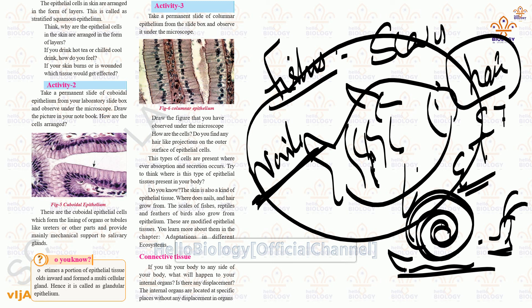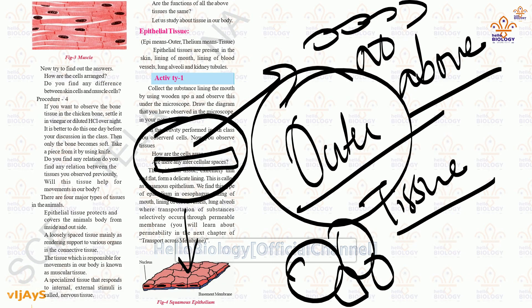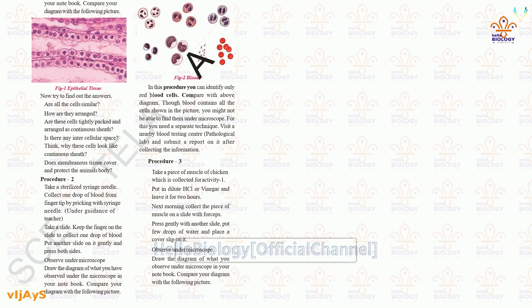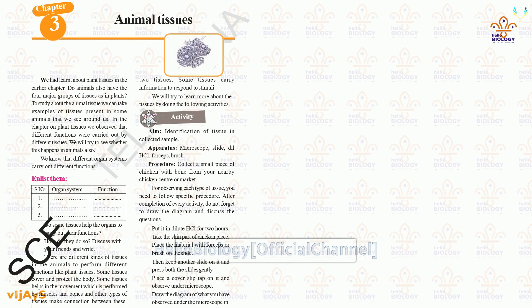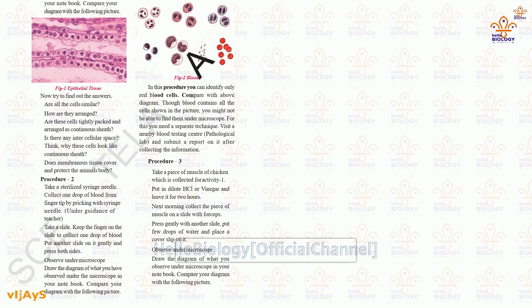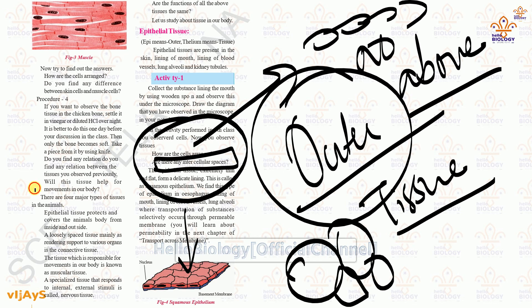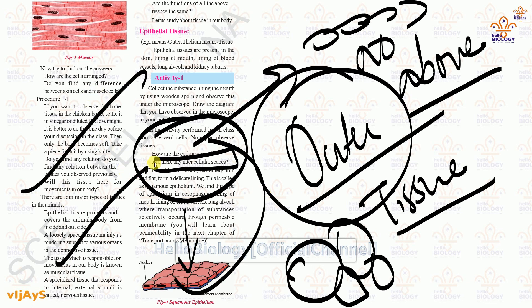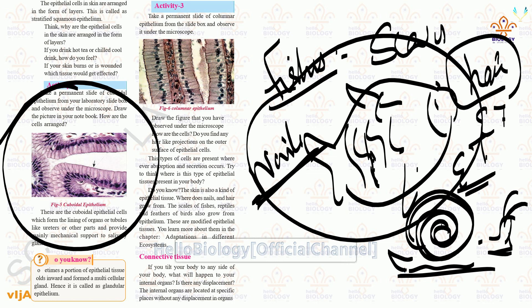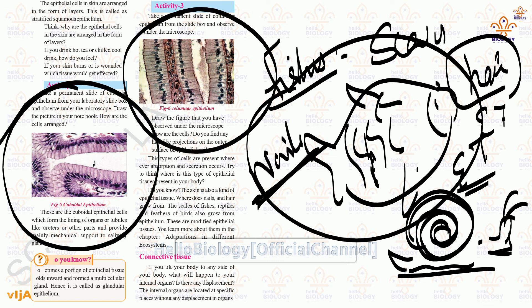To summarize, we discussed about different kinds of tissues under epithelial tissue. We covered squamous epithelial tissue, cuboidal epithelial tissue, and columnar epithelial tissue. This is what we covered in today's class.